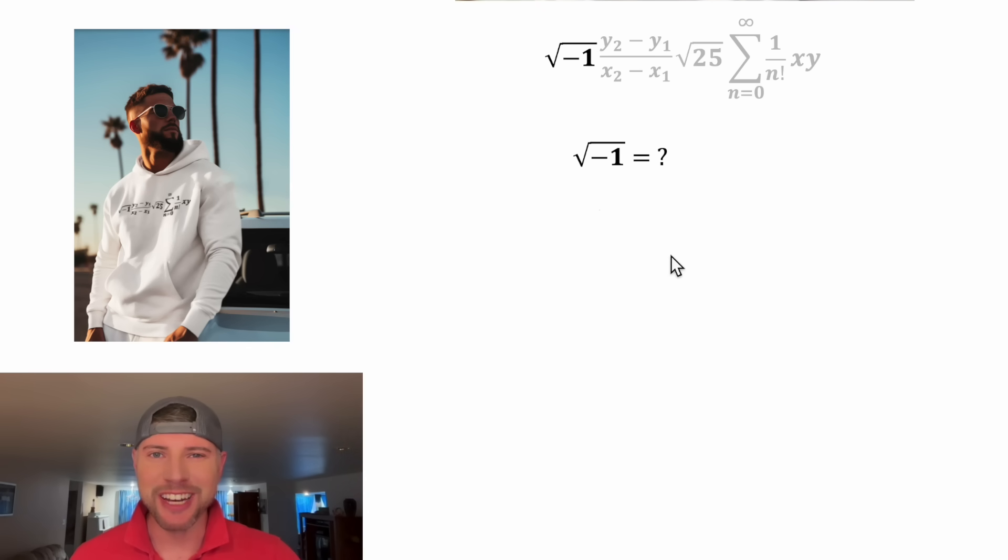So first, let's focus on the square root of negative 1. Typically, you have something like the square root of 9 equals 3, because 3 squared equals 9. The square root is the inverse operation for the square. So really, we want to know what squared would give us negative 1. That would be the answer to this.